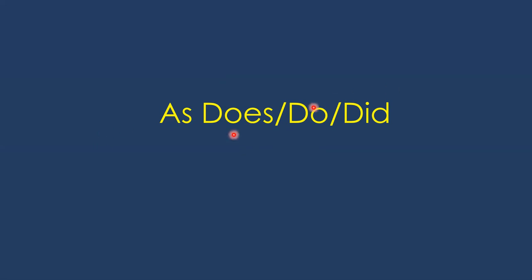So if we compare it, third person singular — he, she, it — we use 'as does.' Or I, you, we, they, or plural nouns — if we compare it, we use 'as do.'